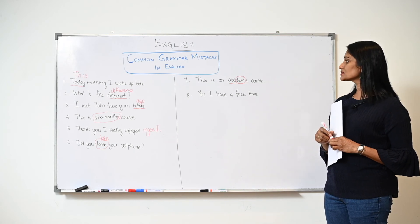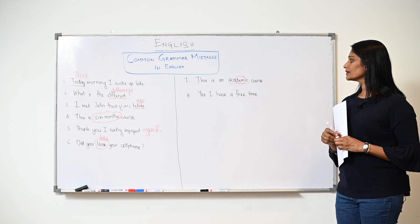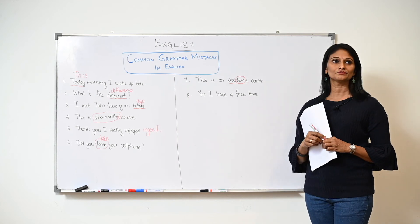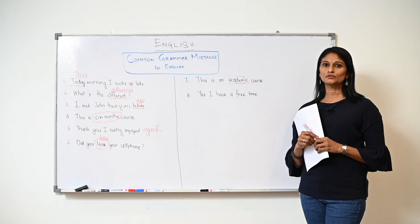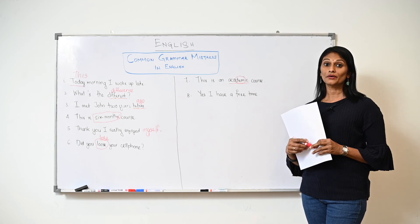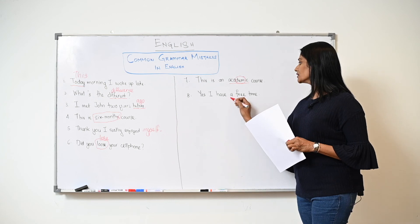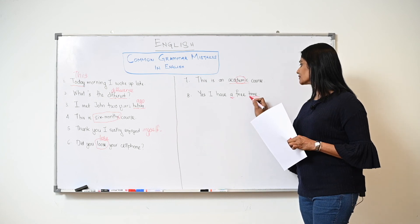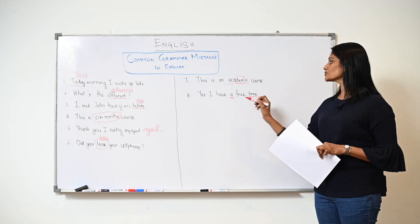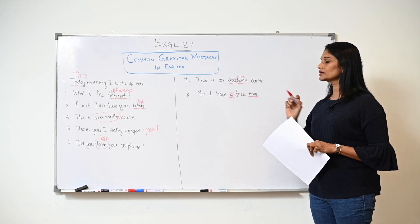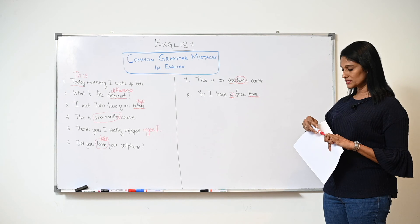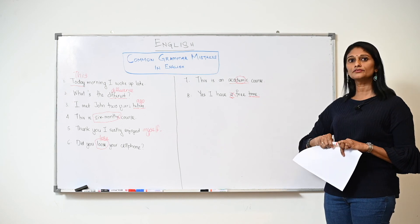Now let's see the last one: "Yes, I have a free time." It sounds pretty correct, right? No, we don't say "a" when you have an uncountable noun here, which is time. So there will not be "a" in this sentence. We say "yes, I have free time."